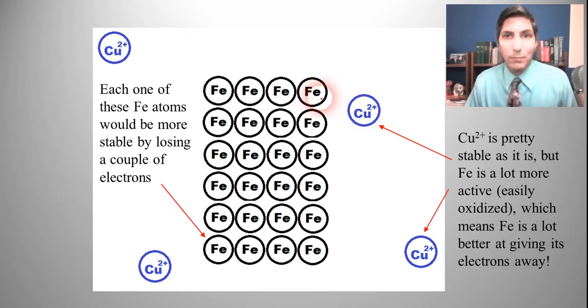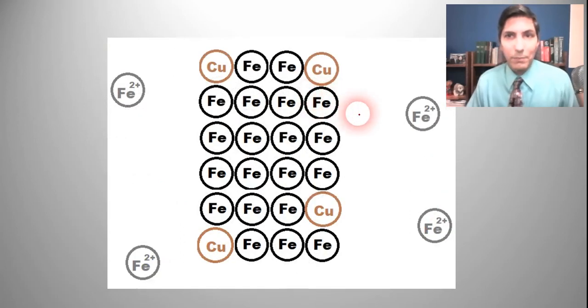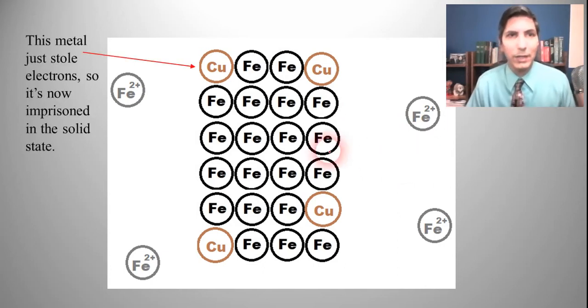So guess what happens? This is what happens. Basically, the copper ions, or at least some of the copper ions, are going to steal electrons - two electrons from the iron atoms.